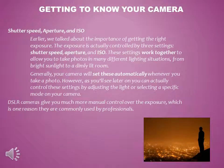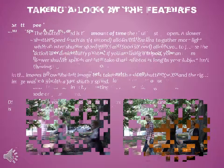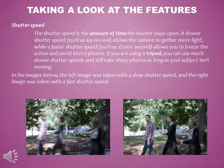Another important part of getting to know your camera is understanding shutter speed, aperture, and ISO. The exposure is actually controlled by these three settings. They work together to allow you to take photos in many different lighting situations — from bright sunlight to a dimly lit room. Generally your camera will set these automatically, but you can control them by adjusting the light or selecting a specific mode. DSLR cameras give you much more manual control over exposure, which is one reason they're commonly used by professionals.